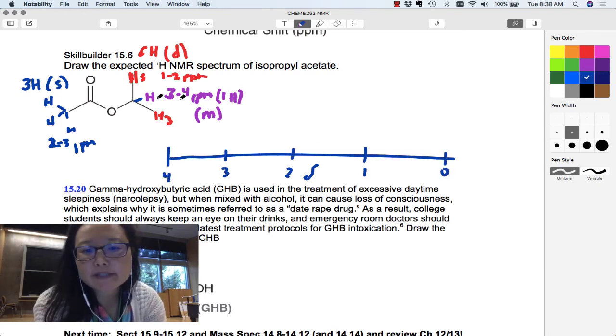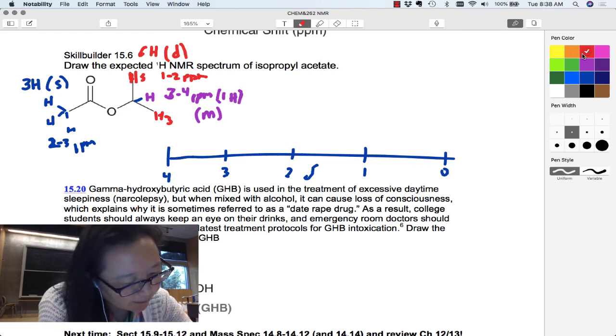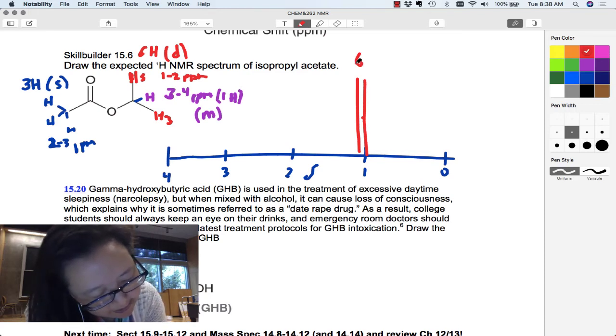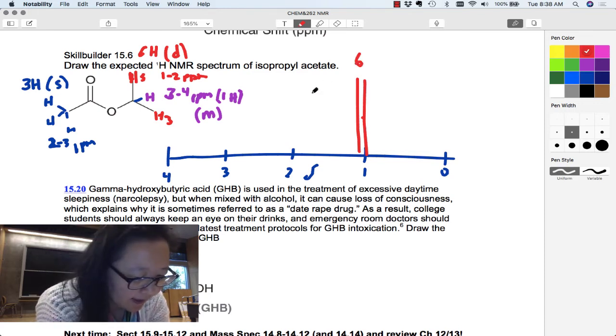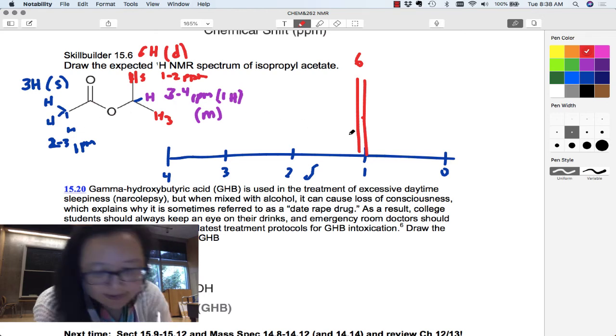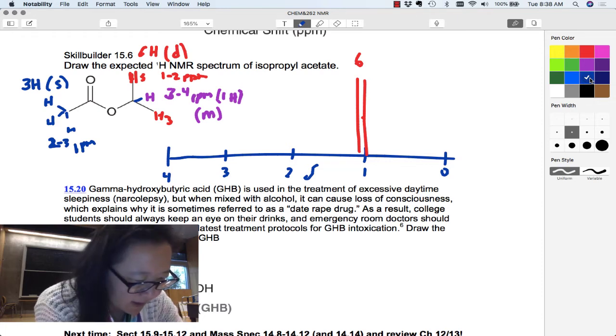So I'm just spacing this out 0 to 4 because that's all I need. I've got from 1 to 2-ish, I've got these methyl groups. So I'm going to do a doublet somewhere in here between 1 and 2. So this is my doublet with the 6H integration. Then I've got 2 to 3. I've got these alpha hydrogens of the carbonyl group. So I'm going to see a singlet between 2 and 3, and that's going to have a 3H integration.